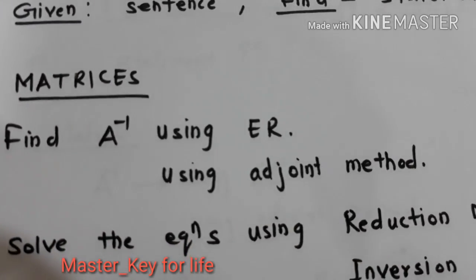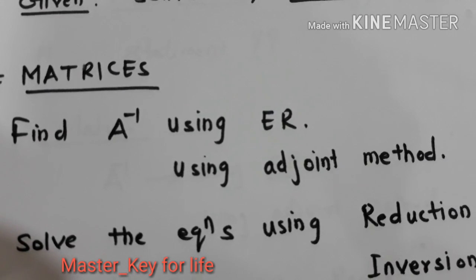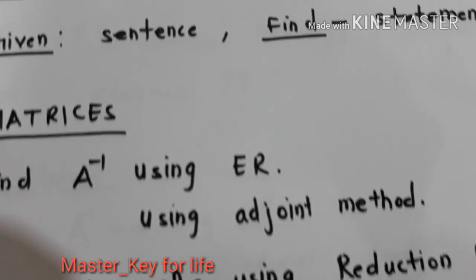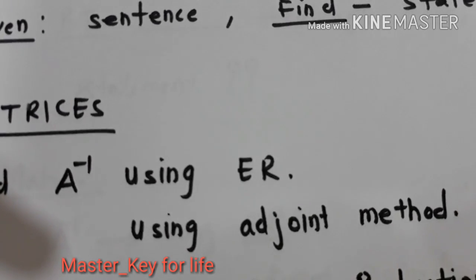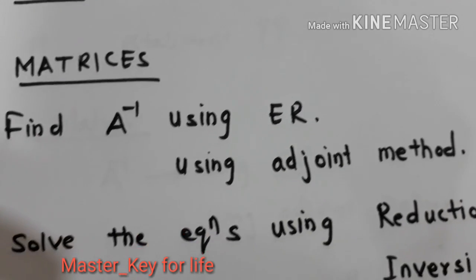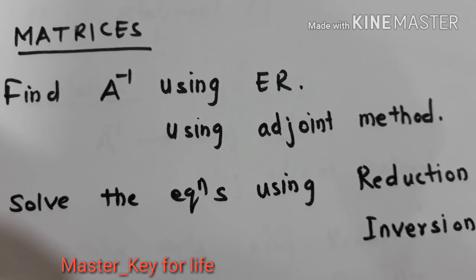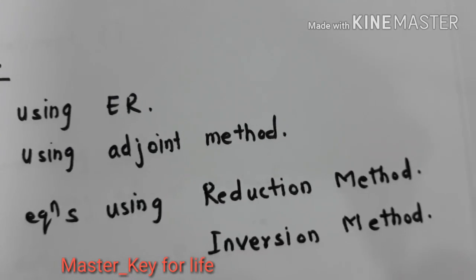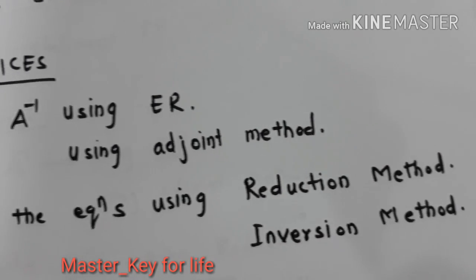Let's move on to matrices. Find inverse of a matrix using elementary row transformation or using adjoint method. Very important problem. Then solving the equations either using reduction method or inversion method. Very important problems.